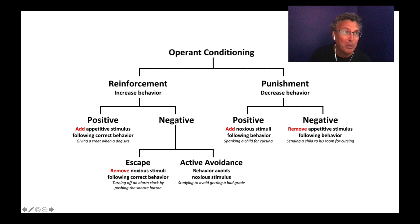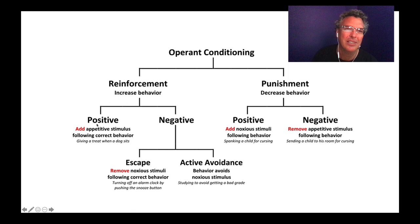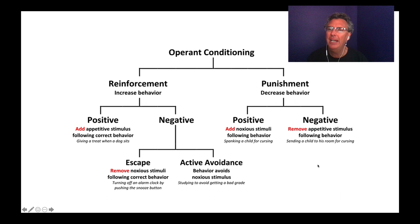Another way to lose something bad is to avoid it in the first place — active avoidance. If you study, you know that without studying you'd get a bad grade, so by studying you avoid that negative outcome. That makes you more likely to study in the future. On the negative side, you can also add a noxious stimulus — like spanking a child for cursing. If you do something and get spanked, you don't want to do it again.